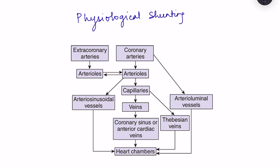The third characteristic is the presence of physiological shunting. Not all coronary circulation gets oxygenated by passing through the lungs. Venous blood from the coronary arteries, arterioles, and capillaries drains via the coronary sinus or anterior cardiac veins, which mainly drain into the right atrium, then right ventricle, and then through pulmonary circulation to the lungs before entering the left atrium.